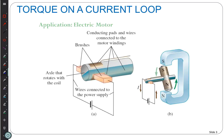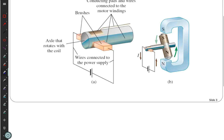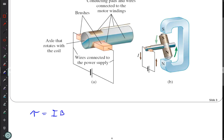We ended last class period by introducing the electric motor. The electric motor is the device we use with that current loop. We had the clicker question about the net force and then had students calculate the torque on each piece of that loop. We ended saying that the torque was equal to the current times the magnetic field times the area AB. So that's equal to IB times the area.